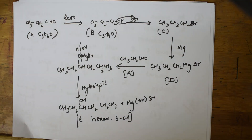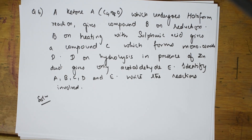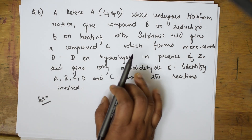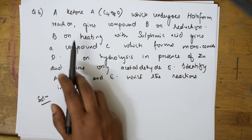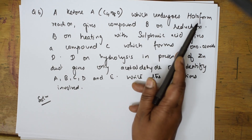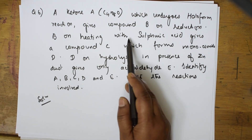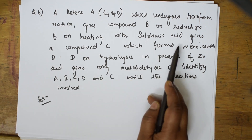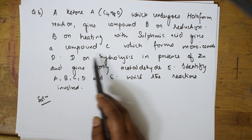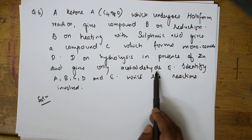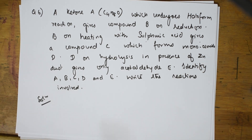Welcome students, let's start off with the sixth question. Hope you understood the fifth question — I am doing it slowly for clear understanding. Whenever a paragraph-based question is given, try to make a summary of the given facts and it becomes easy. In this question, they said a ketone A with formula C₄H₈O undergoes haloform reaction to give compound B; B on reduction gives a compound; B on heating with sulfuric acid gives compound C.